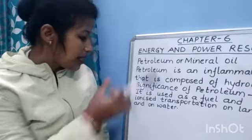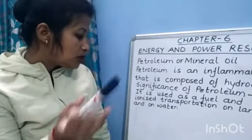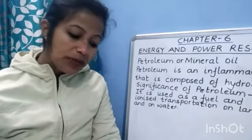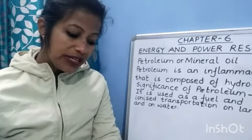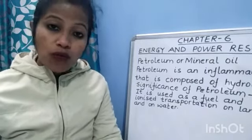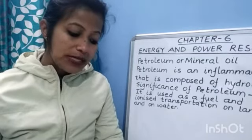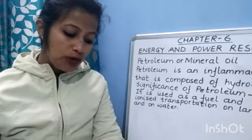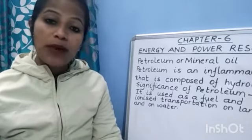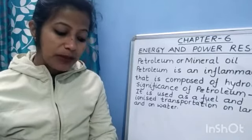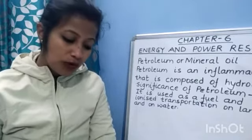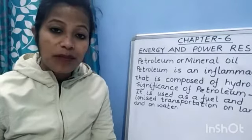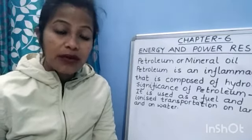The significance of petroleum: it is used as a fuel and has revolutionized transportation on land, in air, and on water. India is not a major producer of mineral oil. The oil reserves of India are estimated to be about 4,000 million tons, and India produces about 33 million tons of crude petroleum. About 63% of it is produced from Mumbai High, 18% from Gujarat, and 16% from Assam — these are the major mineral oil producing states in India.